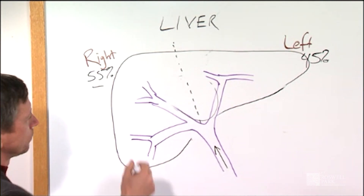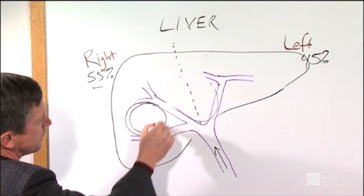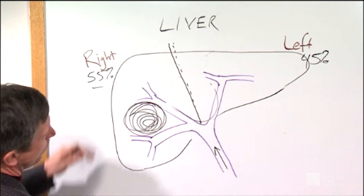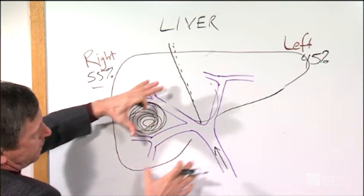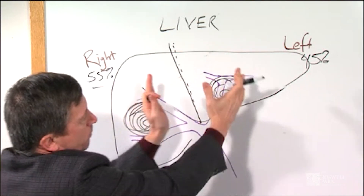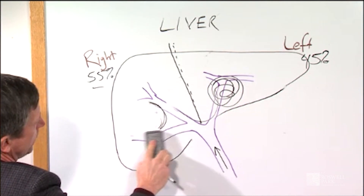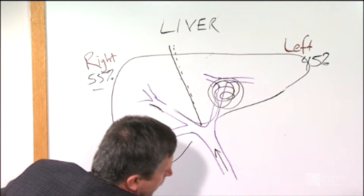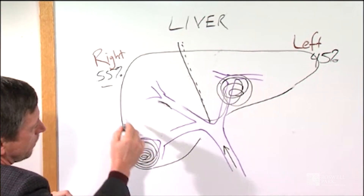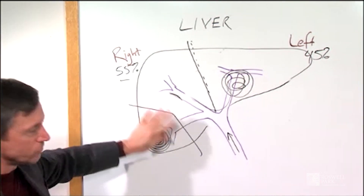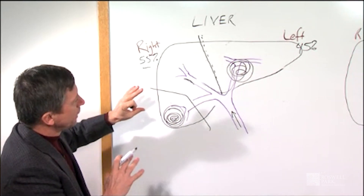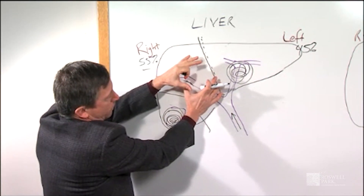For example, a tumor in this location here would require removal of the right side of the liver. In that case, we would remove the right side, and the left side of the liver would grow back. If the tumor is over here, then we would remove that side and the healthy right side would regenerate. If a tumor is very peripheral on the edge, it may only be necessary to remove that section of liver, as long as you have clean, clear margins of normal liver around it.